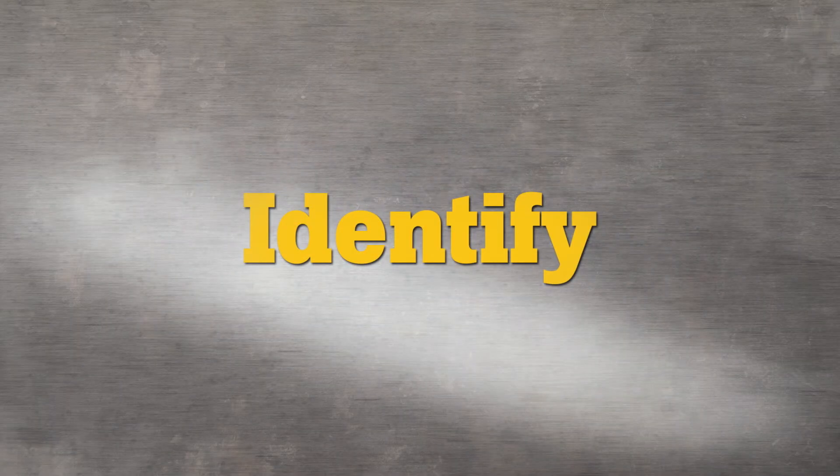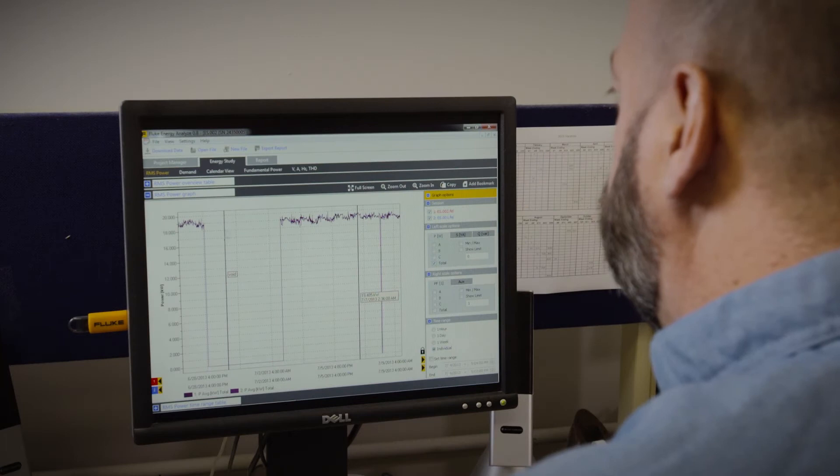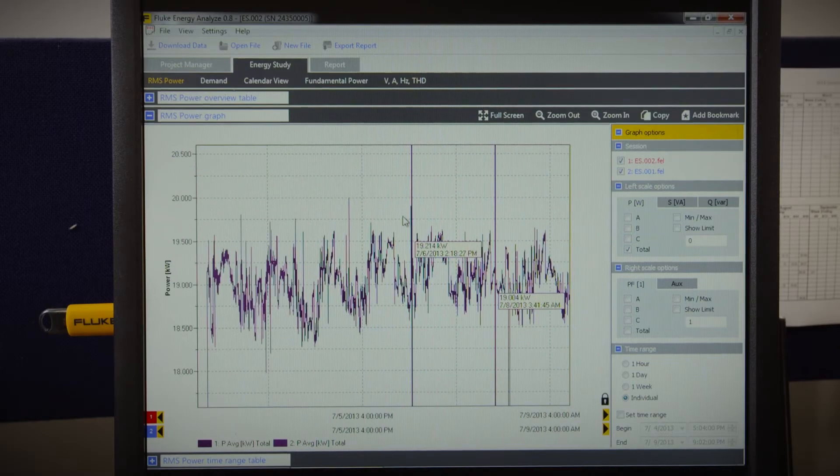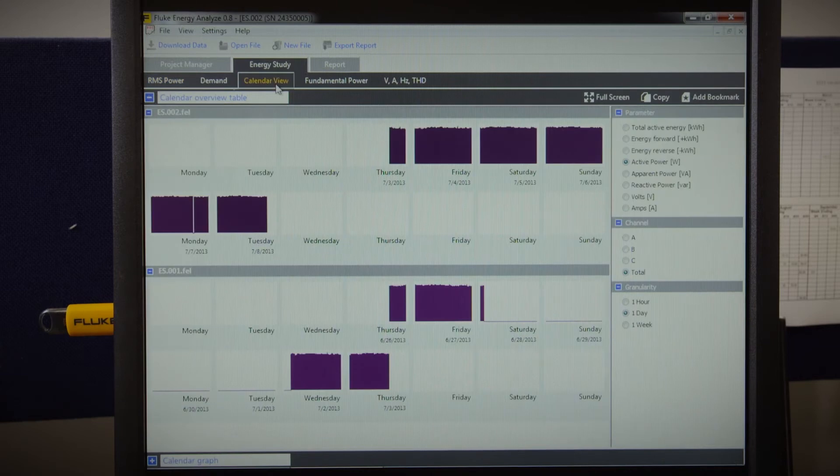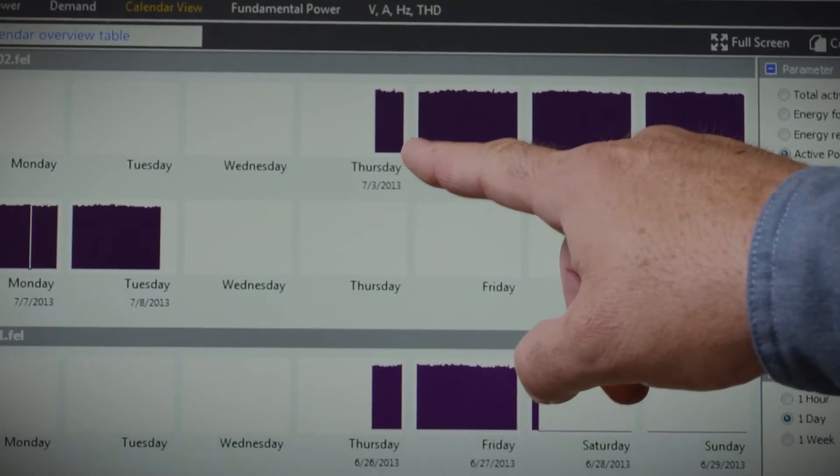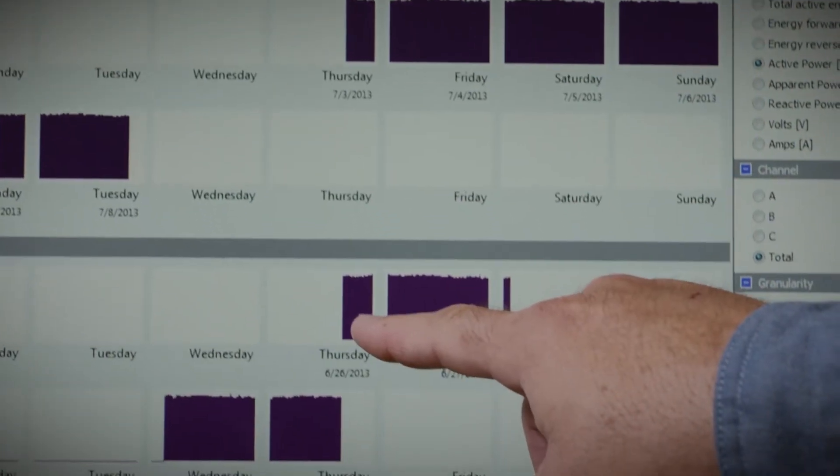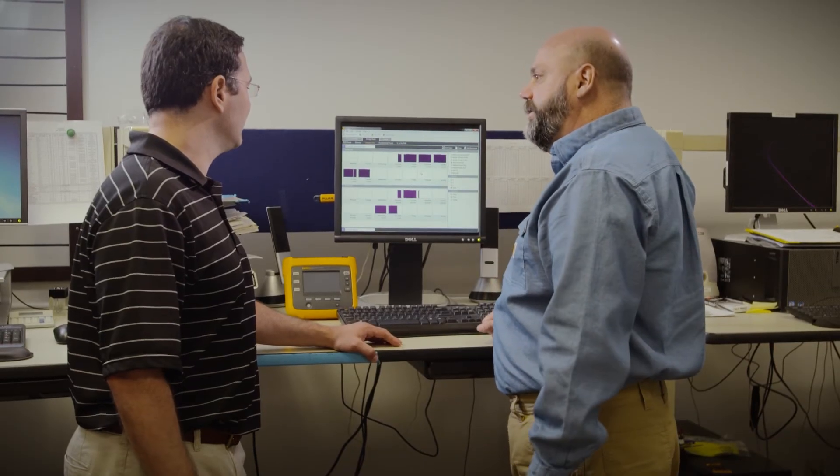Identify energy inefficiencies. With the Fluke 1730 Energy Logger, you can easily view the power profile captured over a logging period. By viewing the graphs, you can start to understand the rhythm of energy usage in your facility and begin to see the potential energy inefficiencies.